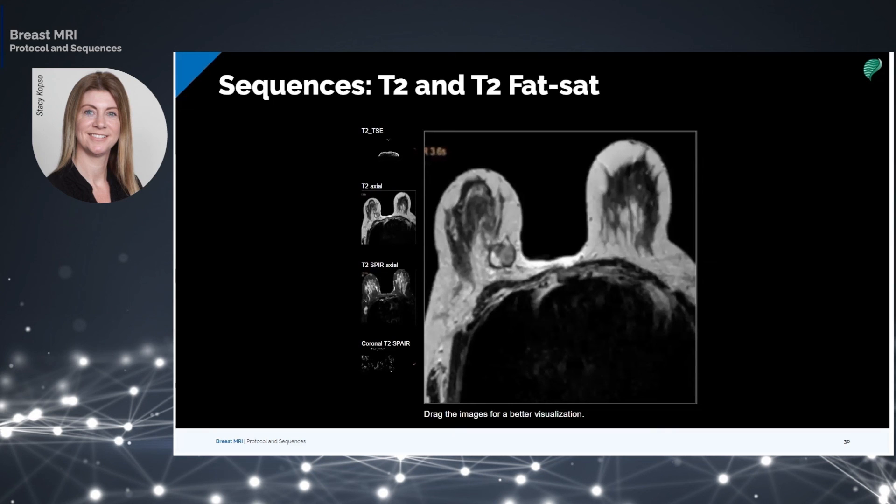Lesions that appear hyperintense on T2 and T2 fat sat are cysts, fibroadenomas, malignant lesions, glandular tissue, and inflammation of the mammary ducts.